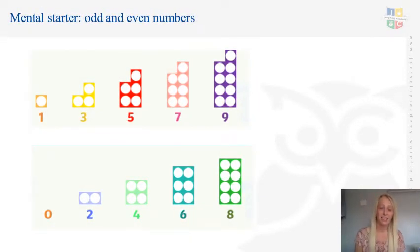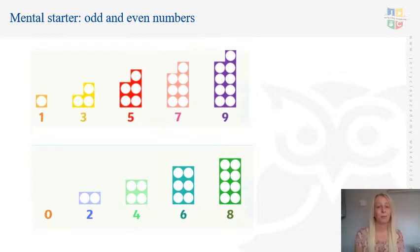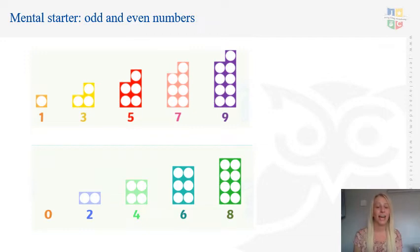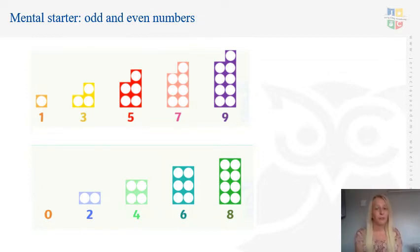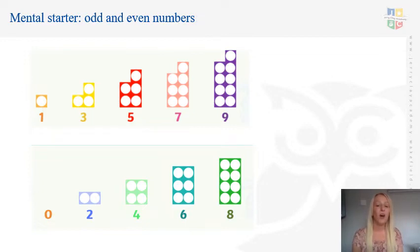For our mental maths starter today, we are going to continue our work on odd and even numbers. I've shown the Numicon from yesterday's lesson to help remind us. Can you remember what an even number is? An even number is a multiple of 2. So when we are counting in 2s, it is an even number — any number that ends in a 0, 2, 4, 6, or 8 in the 1s column.